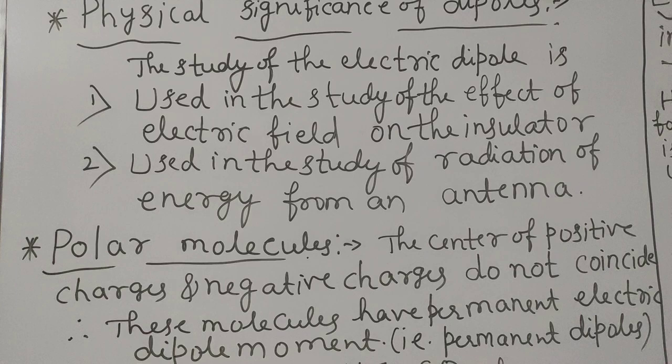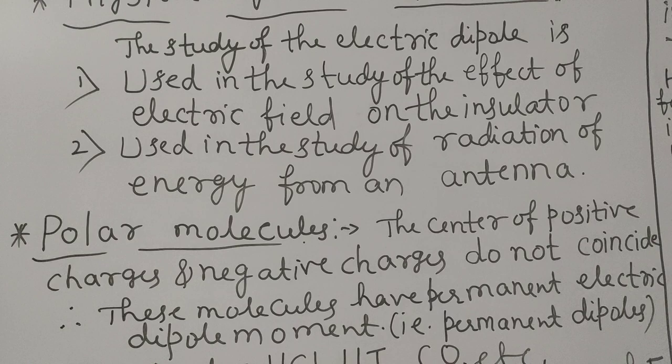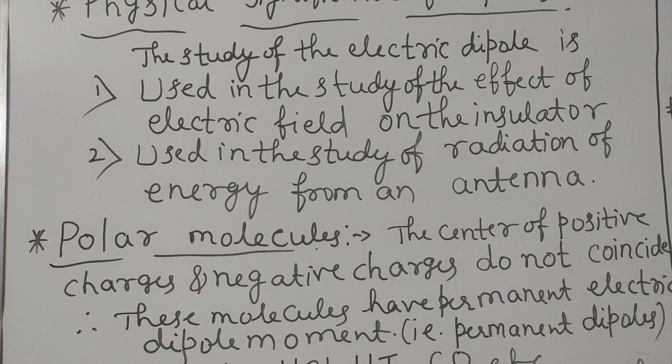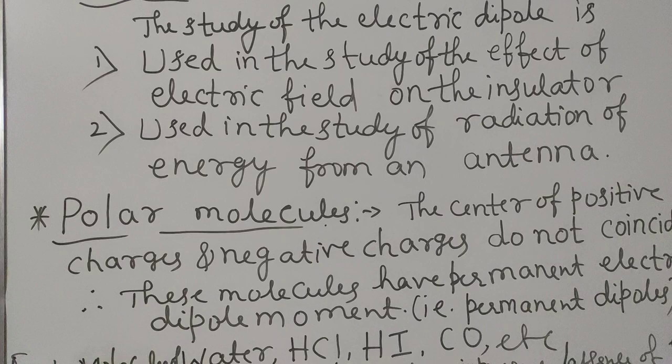Used in the study of the effect of electric field on the insulator. What are insulators? Insulators are materials which do not conduct — through them electricity will not flow. For these insulators, how does electric field affect them? We study the electric dipole to understand the effect of electric field on the insulator.